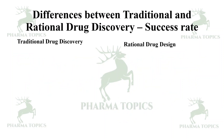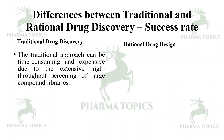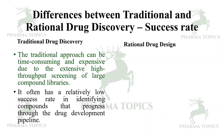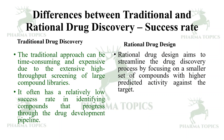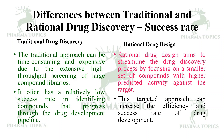Regarding success rate, the traditional approach can be time-consuming and expensive due to extensive high throughput screening of large compound libraries, often with a relatively low success rate. Rational drug design aims to streamline the drug discovery process by focusing on a smaller set of compounds with higher predicted activity against the target, thereby increasing the efficiency and success rate of drug development.